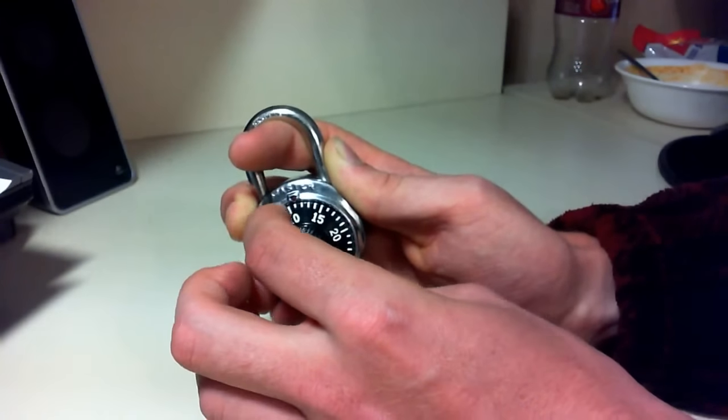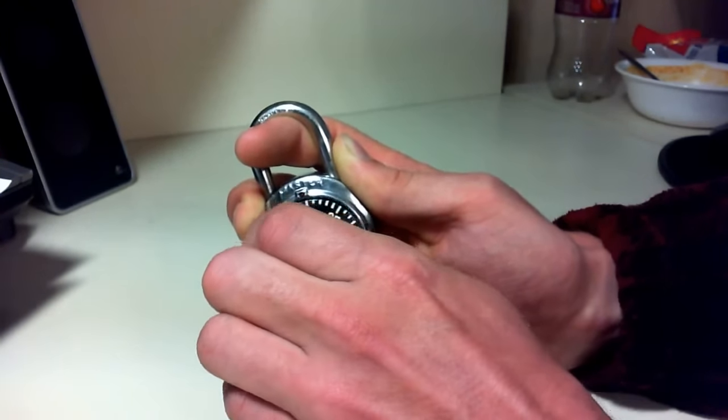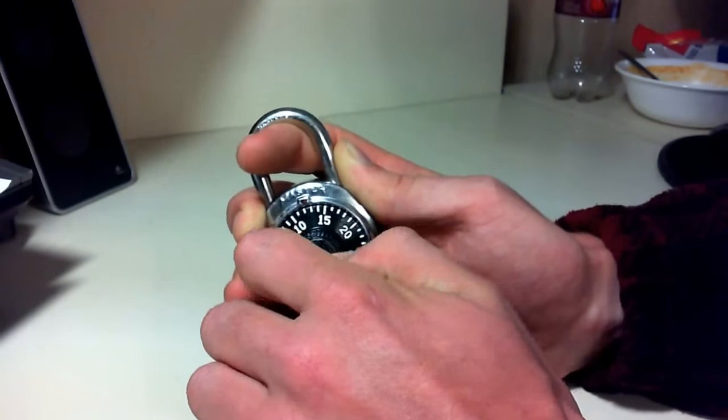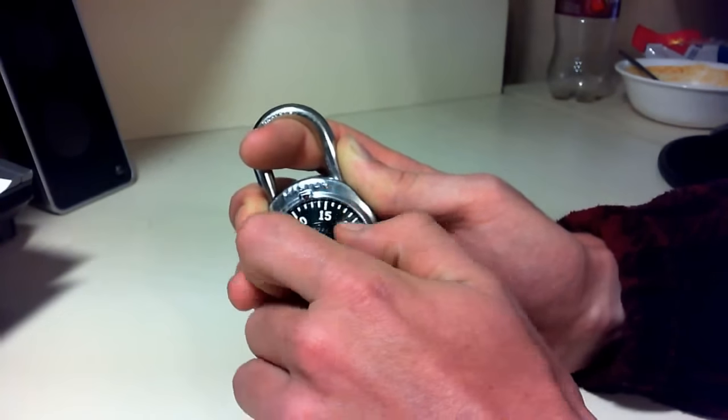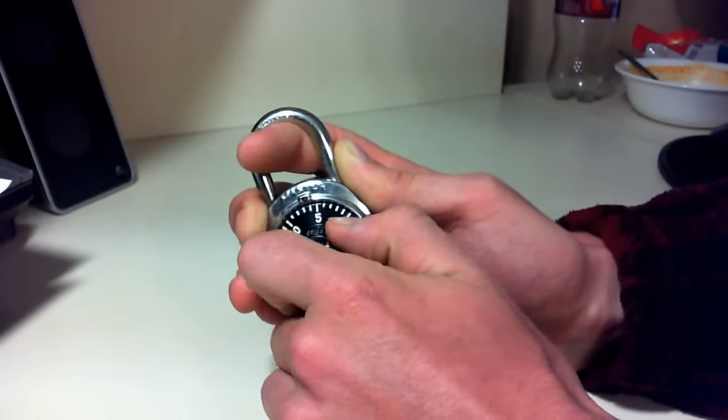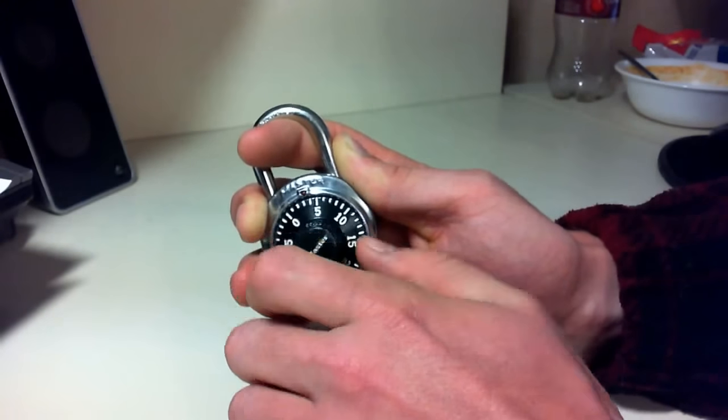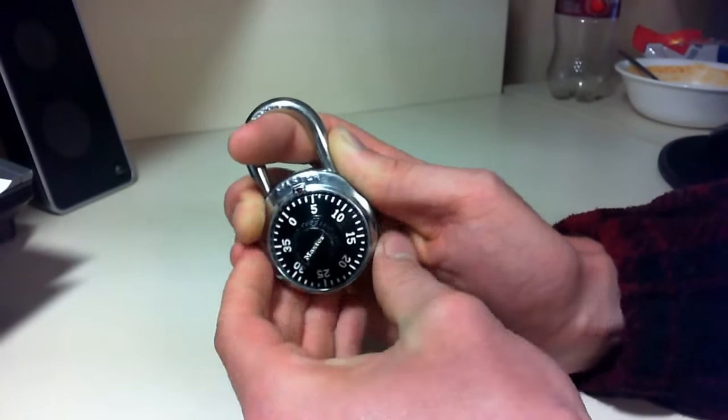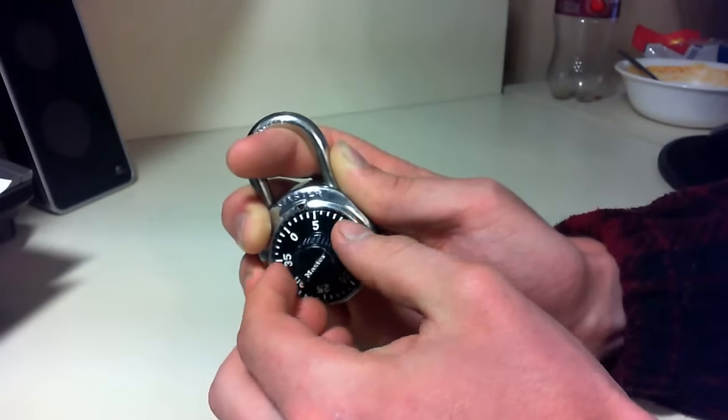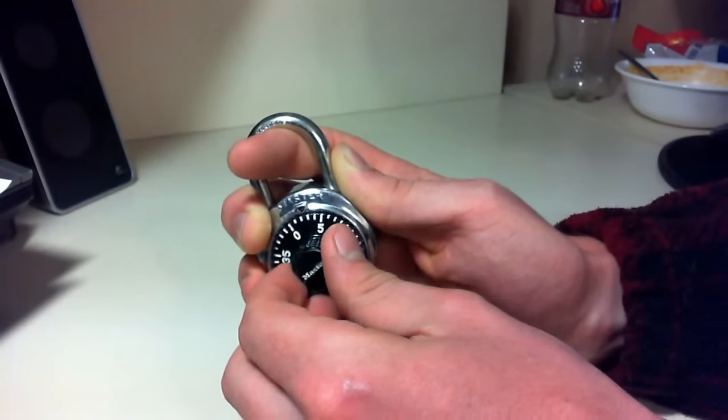Now from here, you're going to apply a little bit more shackle pressure, and you're going to turn counterclockwise. You're going to turn counterclockwise for a few turns until the lock will stop, and it won't turn counterclockwise anymore. Once you get to this point, you're going to do the same style of shackle pressure that you did for the first number.